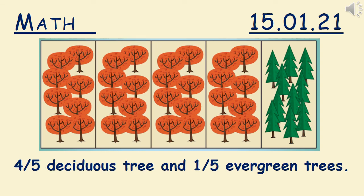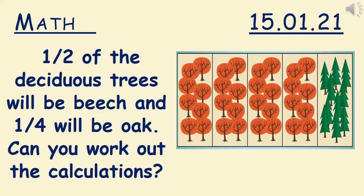That's right, there are four fifths of the trees that are deciduous trees and one fifth are evergreen trees. This time half of the deciduous trees will be beech and a quarter will be oak. Can you work out the calculations? Pause the video now. Think about what we've done throughout this lesson and note them down in your home learning book.